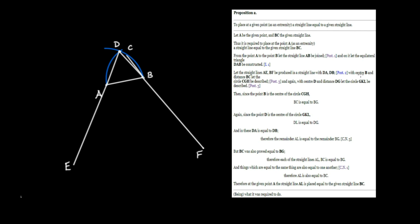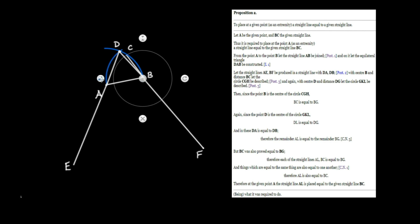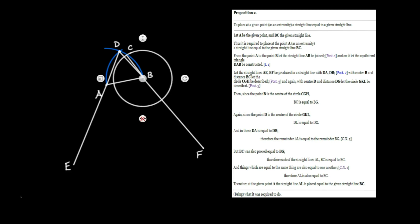Next we produce a circle with center B and a distance of BC. Let the circle CGH be described. So we draw our circle with center B and radius BC. This intersection point we call G, and for labeling purposes we'll call this point H — so that's circle CGH.